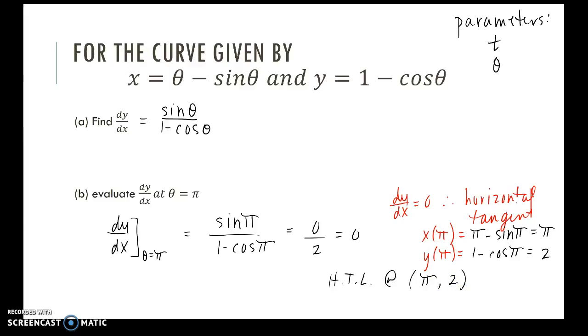And then 1 minus the cosine of pi would give us 2. So the horizontal tangent line occurs at the point pi comma 2. Okay, what else does this tell us? Horizontal tangent lines. Because it's a smooth curve, this would be a max or a min. So we know that this would be a turning point on the graph of the function. And we would be able to determine the behavior of the graph. And we'll do that in class together.